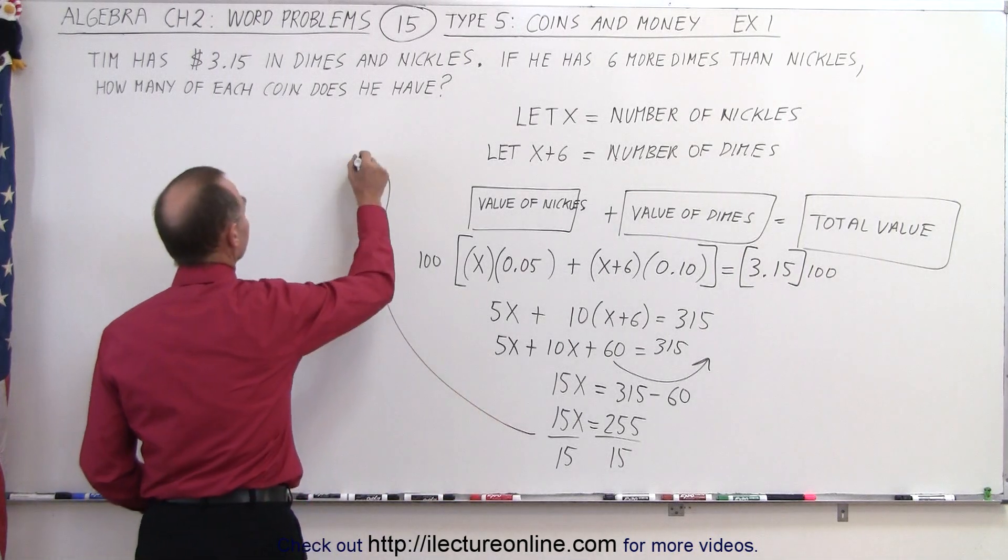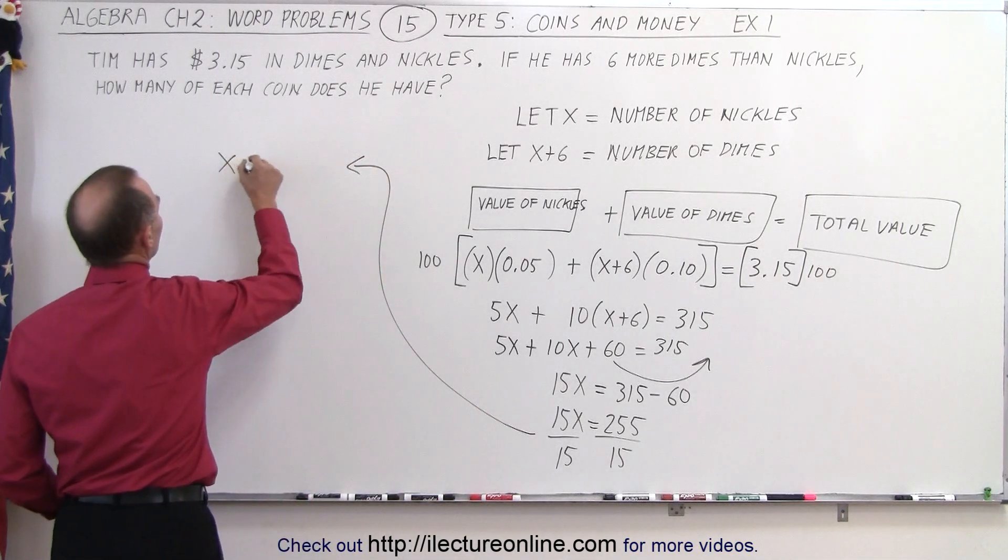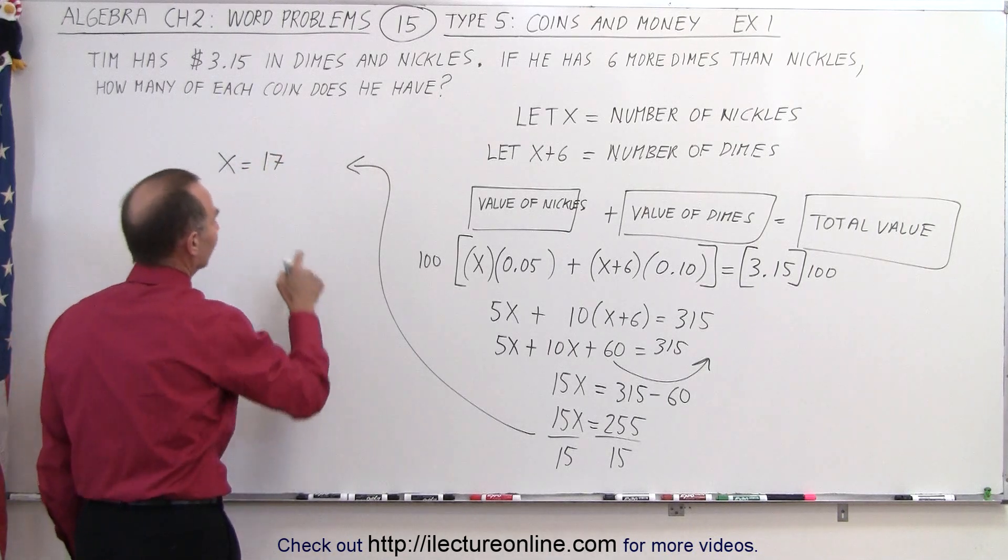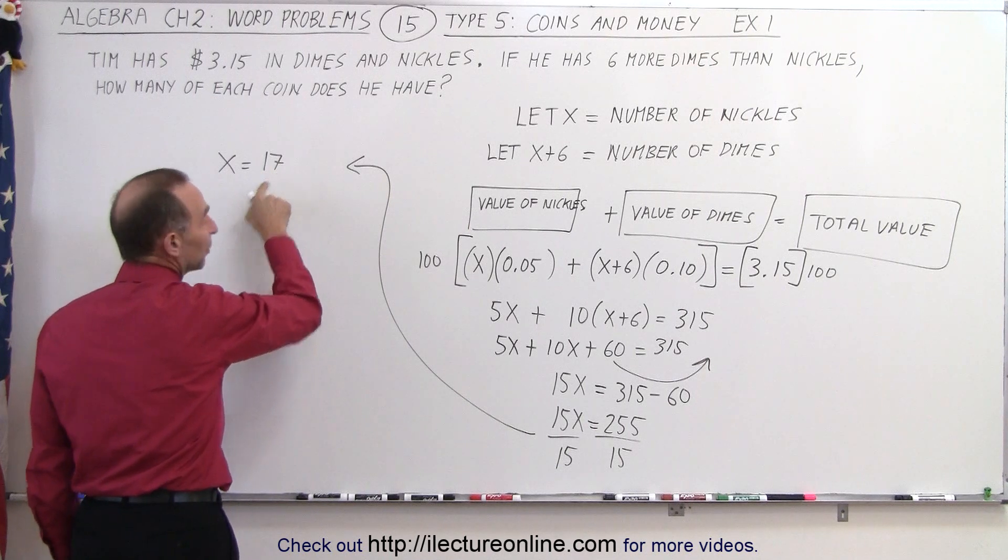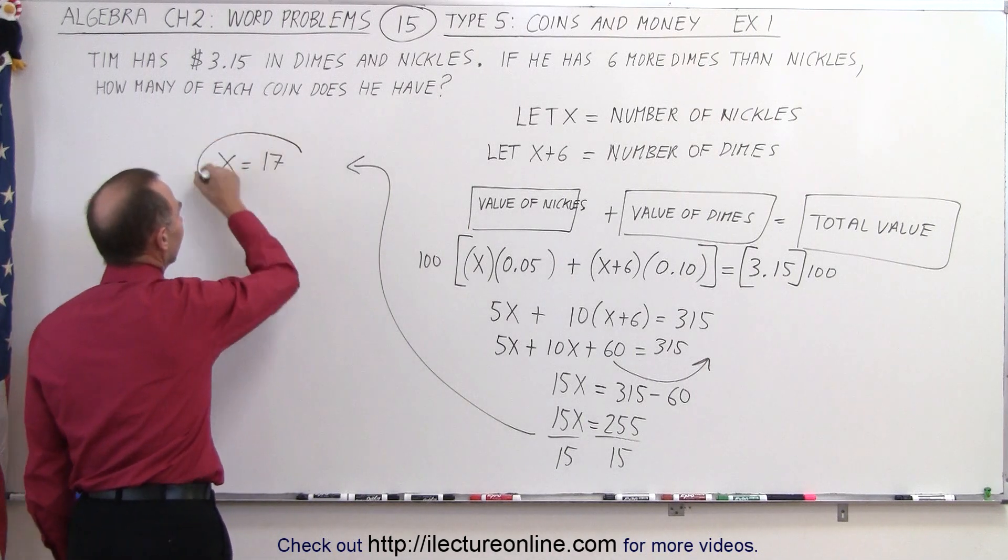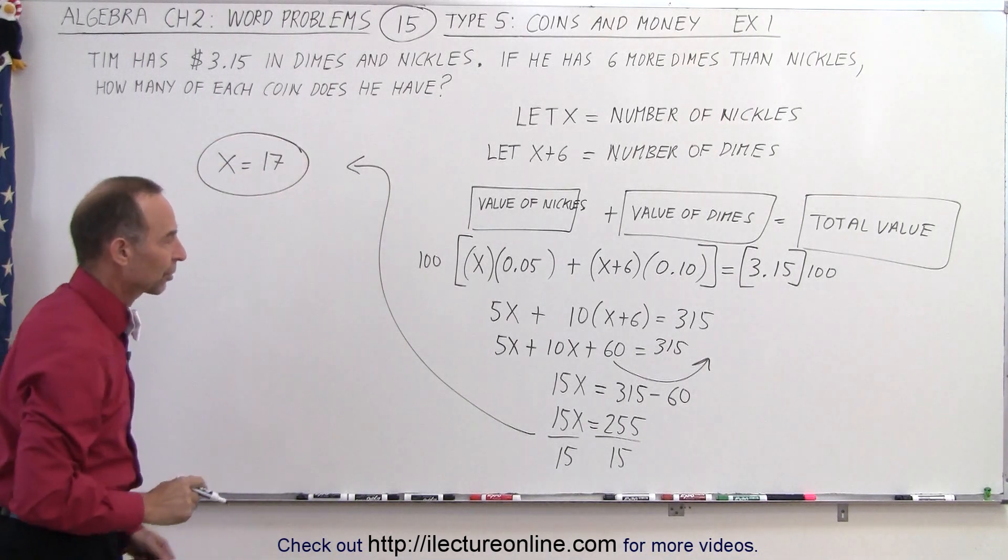when we come up here, we have x is equal to 17 because 17 times 15, that would be 170, that would be 220, that would be 255. So that is correct, x equals 17 is the correct value.